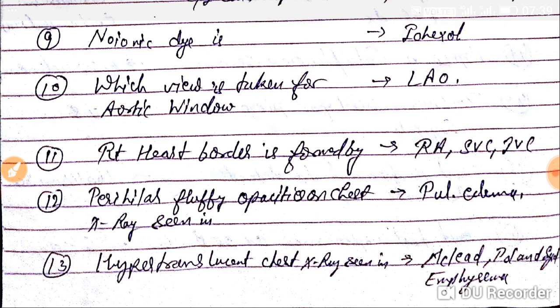Question number thirteen. Hypertranslucent chest X-ray is seen in McLeod syndrome, Swyer-James syndrome, and emphysema.